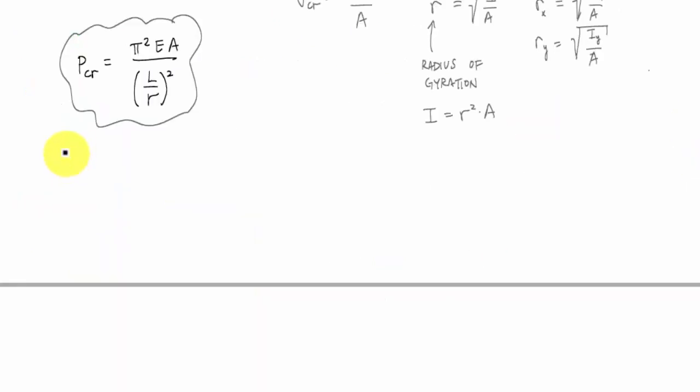In this pin-pin column that I used to derive the critical load equation, the length of the column was this L. And the buckled length was all the way from node to node, from zero to zero, like this.